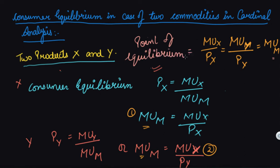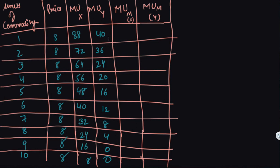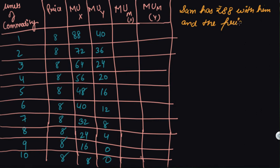Let's understand this with the help of an example. We have a table with units of commodities, their prices, and marginal utilities of X and Y. It is given that Sam has rupees 88 with him, and the price of both X and Y is rupees 8 each — the price of X and Y is the same in the market.